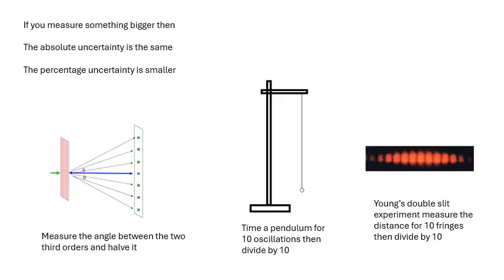A few more notes about uncertainty. If you measure something bigger, then the absolute uncertainty is the same. You know, if you're timing five seconds and then you're timing a hundred seconds, the absolute uncertainty is the same, but the percentage uncertainty is smaller. So it's always a good idea to make whatever you're measuring bigger. For example, with a diffraction grating, if you just measure the angle to the first order, then that's a pretty small angle.